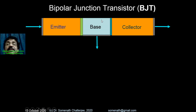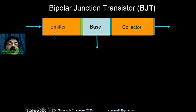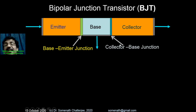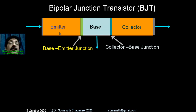Our discussion is focused on the bipolar junction transistor. Three components are responsible: the emitter, the base, and the collector. And importantly, there are two junctions: the base-to-emitter junction and the collector-to-base junction. So two junctions and three terminals or three sectors constitute a transistor.